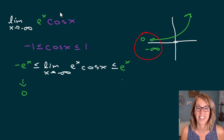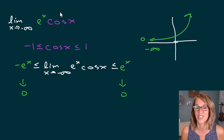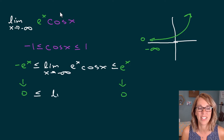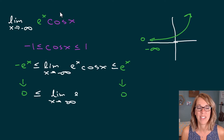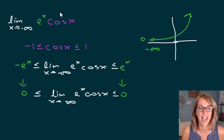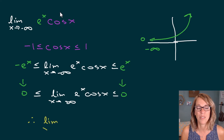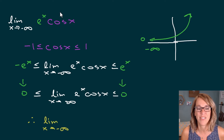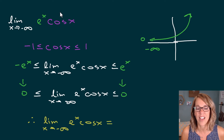As I take this limit, I get that sandwiching of zero again — which is a really common answer. It's not always the answer, but if you have to guess something, guess zero. So that's zero less than or equal to the limit as x approaches negative infinity of e to the x cosine x, less than or equal to zero. I've got it sandwiched between zero, so the limit as x approaches negative infinity of e to the x cosine x is in fact zero.